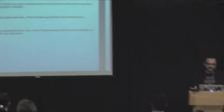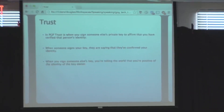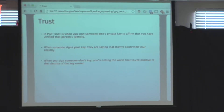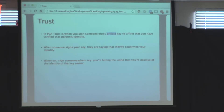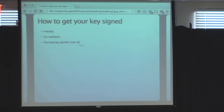In GPG, trust means signing someone else's public key. It basically means: I've verified this person is who they claim to be. This is why it's important to use your legal name on your key's user ID. The typical process: someone asks you to sign their key, you look at it, see their name, check government ID or other proof tying the person to that name, and if satisfied you attach a signature to their public key and push it to the key server. You can get your key signed by friends, coworkers, or at key signing parties — events where GPG users gather specifically to verify IDs and sign each other's keys.